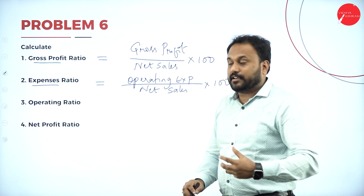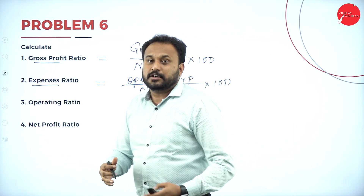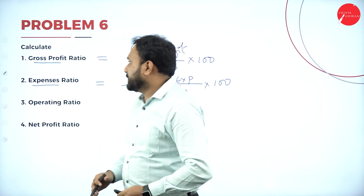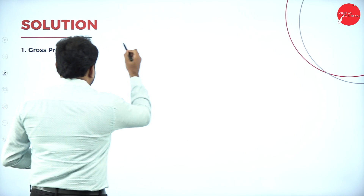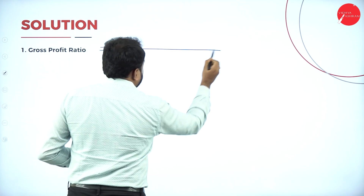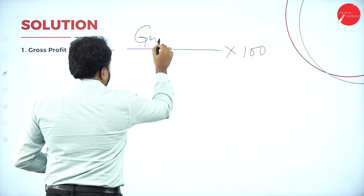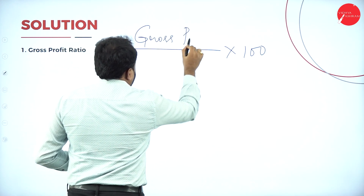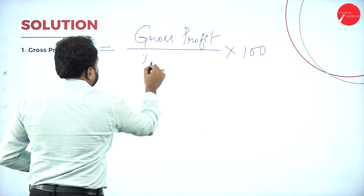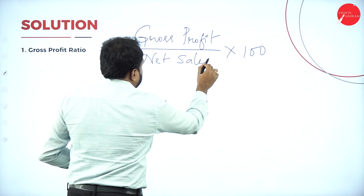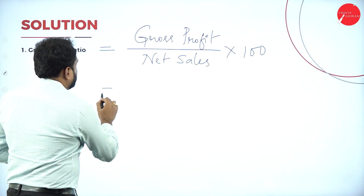Next is Operating Ratio — I'll explain that while solving the problem. And then Net Profit Ratio. Let's start with the first one: Gross Profit Ratio. The formula is Gross Profit divided by Net Sales, into 100. Let me write the numerator and denominator clearly — Gross Profit divided by Net Sales.